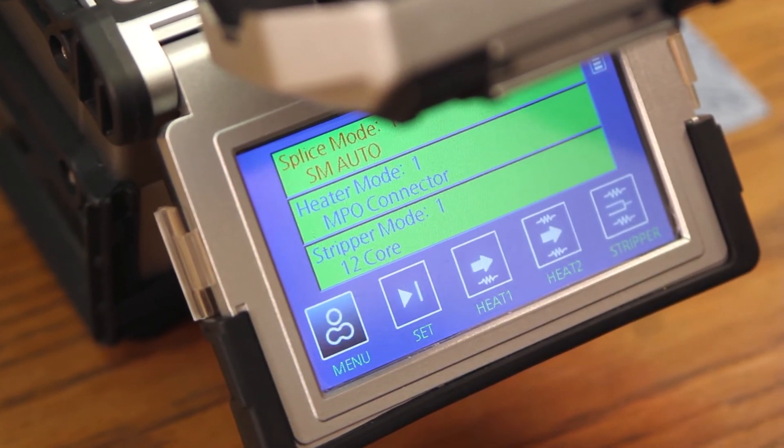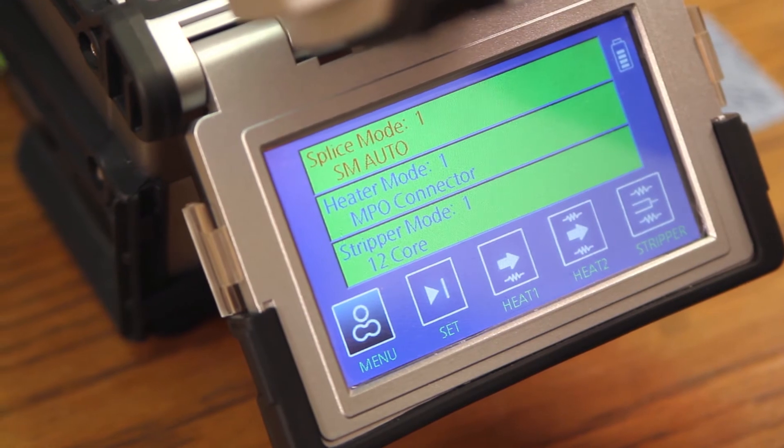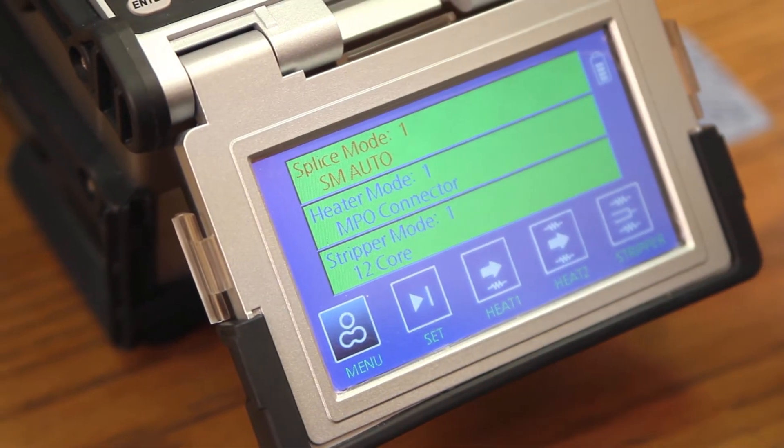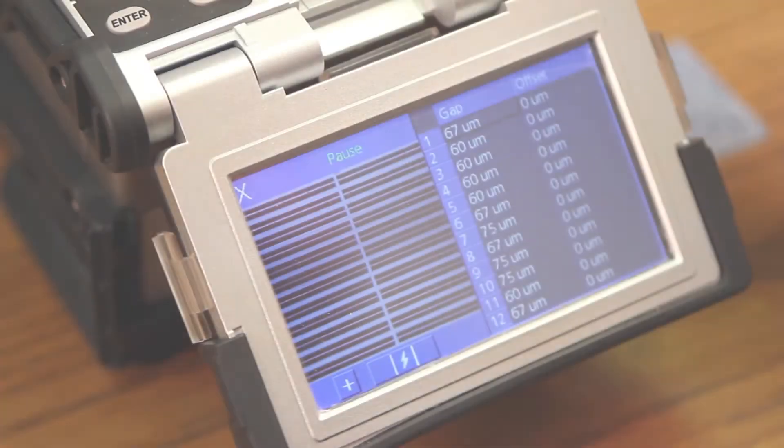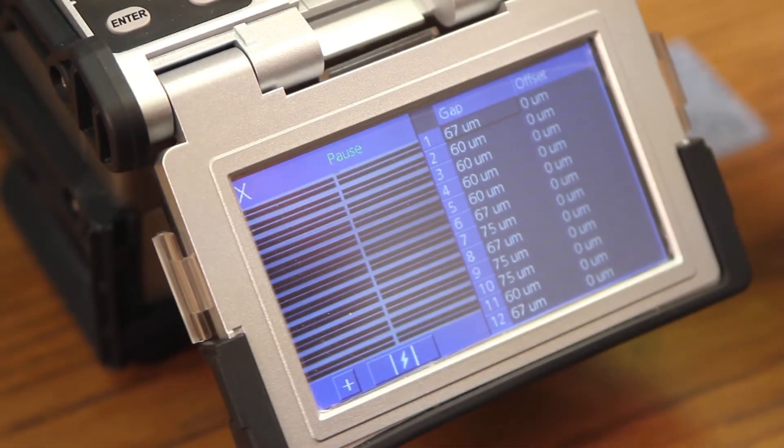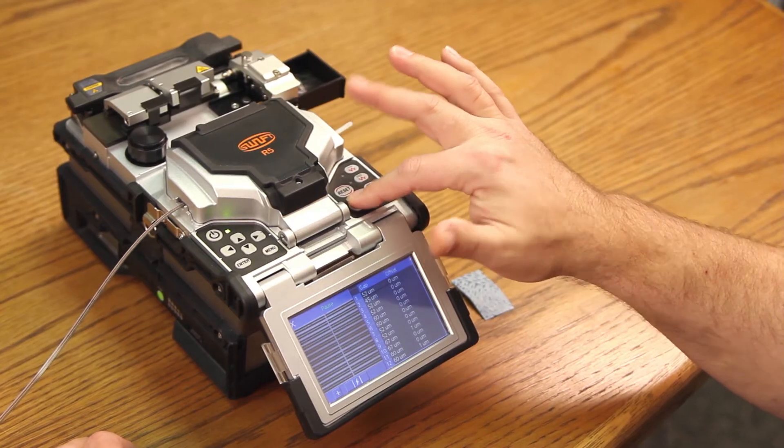Once both fibers are prepped and placed inside the splicer, close your wind cover. Allow it to align. Once you've come to the pause, check your gaps and your offsets. All looks good. At this point, arc.